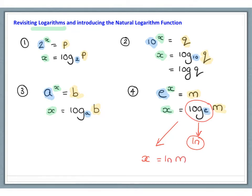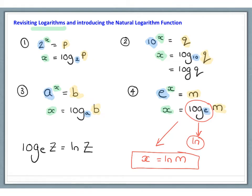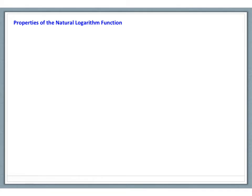In general, log to the base e of a value z is equal to ln of that value z. The natural log function, or ln, is just a logarithmic function with a very specific base, so it follows all of the usual laws of logarithms.